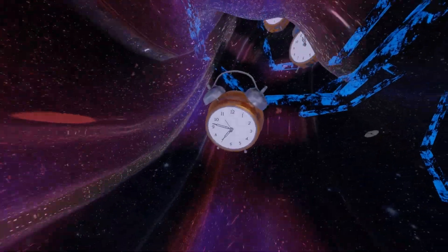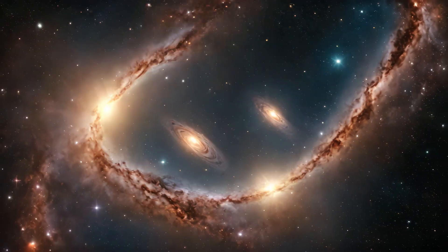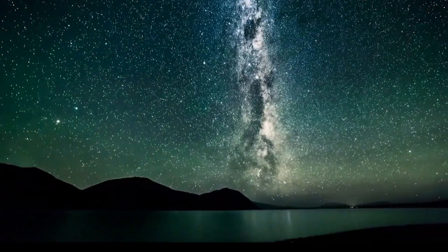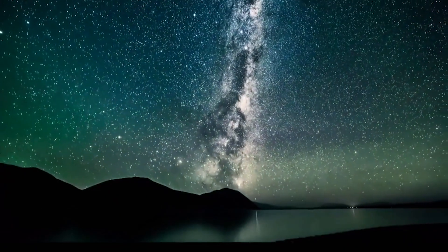And there's more. Those galaxies Webb is spotting from deep time, many are spinning in the same direction. That's weird. If the universe began in pure chaos, we should see random motion. But instead, we're seeing alignment. Almost like the universe started with a cosmic spin.